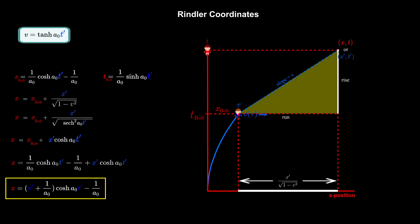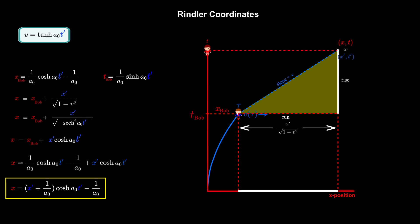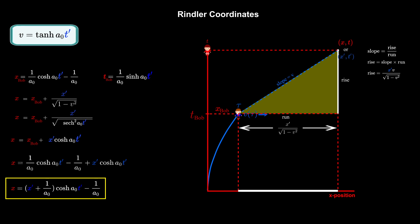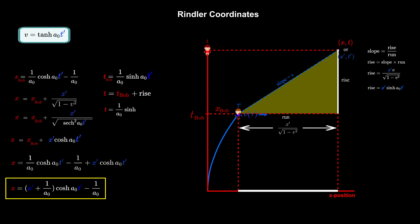This forms a yellow rise-run triangle whose slope is the velocity v. The run has already been calculated to be x' over the square root of 1 minus v squared, so we can solve the slope equation for the rise, which turns out to be x' v divided by the square root of 1 minus v squared. When we substitute hyperbolic tan a-not t' for the velocity, and using the fact that 1 minus hyperbolic tan squared equals hyperbolic secant squared, the rise simplifies to x' hyperbolic sine a-not t'. Then the total time t equals t-Bob plus the rise, giving t equals 1 over a-not hyperbolic sine a-not t', plus x' hyperbolic sine a-not t'. Collecting like terms gives the final result: t equals x' plus 1 over a-not, hyperbolic sine a-not t'.